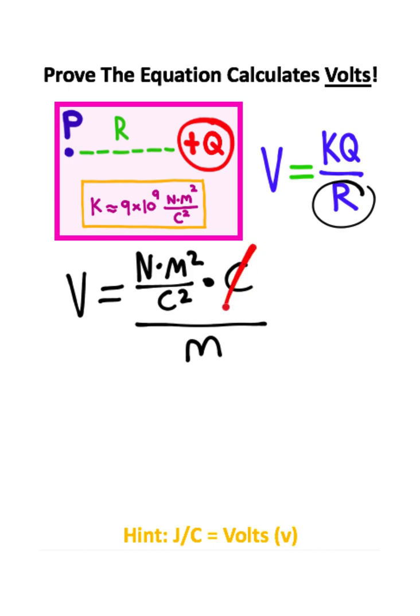I immediately notice that the coulombs here will cancel with one of the coulombs on the bottom of this fraction. I also notice that the meters down here will cancel with one of the meters on top.